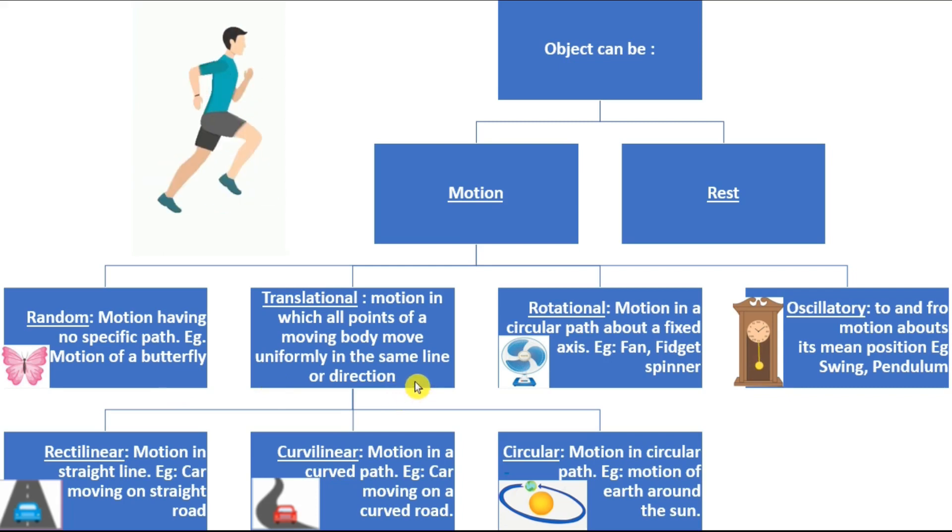Then we have the translational motion. Motion in which all points of a moving body move uniformly in the same direction or line. I don't mean that it has to go straight only. It can be curved. But the major point in translational motion is that the entire body has to move in a path. That can be straight or curved.